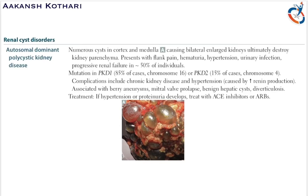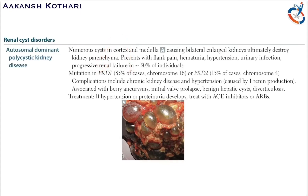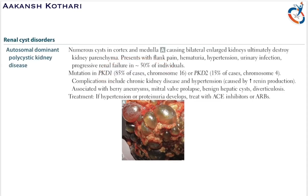Autosomal dominant polycystic kidney disease is due to mutation in the PKD1 gene or PKD2 gene. 85 percent of cases are due to the PKD1 gene, whereas the remaining 15 percent are due to the PKD2 gene. The PKD1 gene is present on chromosome 16, whereas the PKD2 gene is present on chromosome 4.